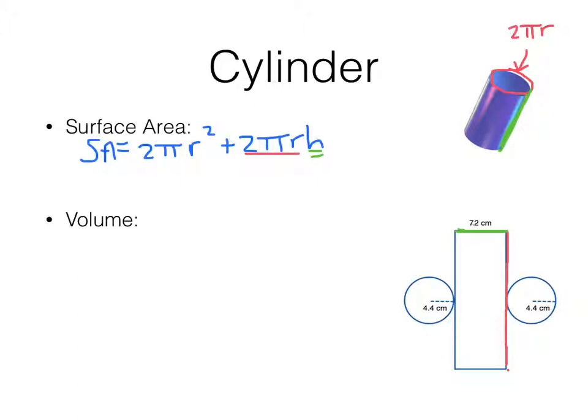Down here that I have the net for. If I was labeling it up here, the radius would be right here, would be 4.4 centimeters. And the height of the cylinder, which is all I need in order to find this, is 7.2 centimeters. So let's start plugging these in.